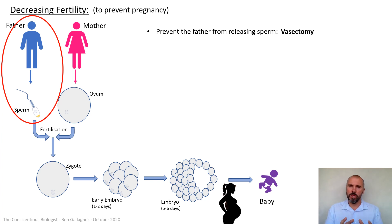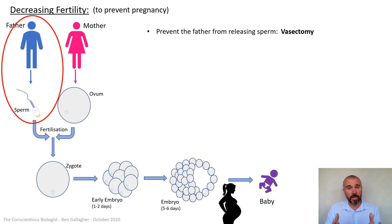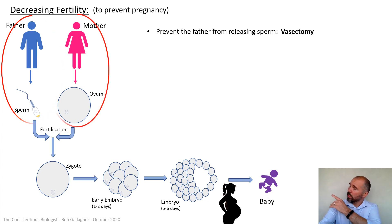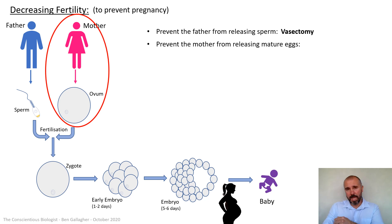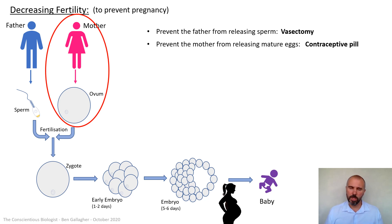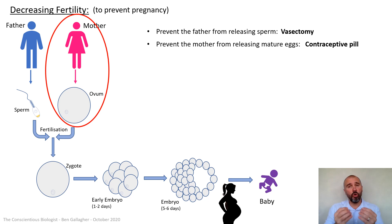A vasectomy is a permanent thing, so it would only be done if a man has maybe already had children or absolutely decides he doesn't want children. Looking at the second option — trying to prevent the mother from releasing eggs — that can be done in a more straightforward and non-permanent way. A woman can take the contraceptive pill, which is probably the most common form of contraception, and it works by manipulating the hormonal cascade seen in the menstrual cycle.